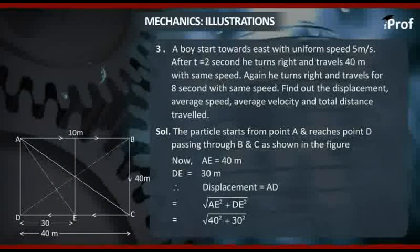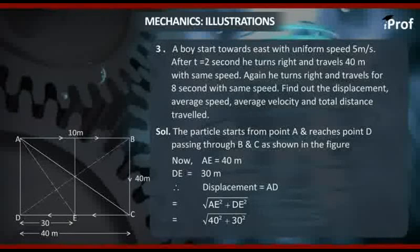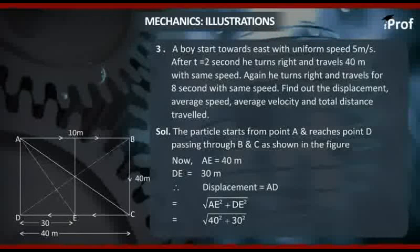CB is 40 meter, DE is 30 meter, DC is 40 meter.